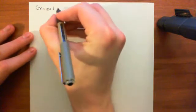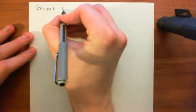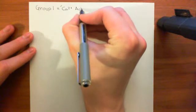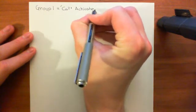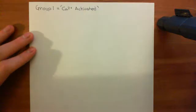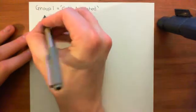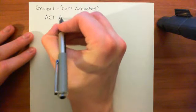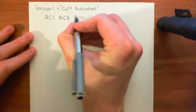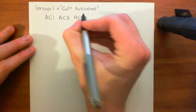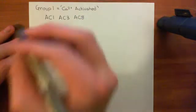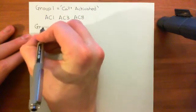Group one is also called the calcium-activated adenylyl cyclases. It contains adenylyl cyclase enzymes which will be activated by an increased concentration of calcium in the cytoplasm nearby them. This group includes adenylyl cyclase 1, adenylyl cyclase 3, and adenylyl cyclase 8 — three members of the nine in this group.